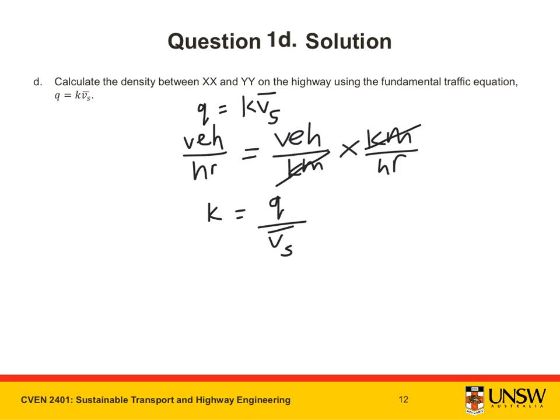Now we have already calculated the space mean speed in part C, so this is known. We aren't directly given a value for the traffic flow Q, but we can deduce it.